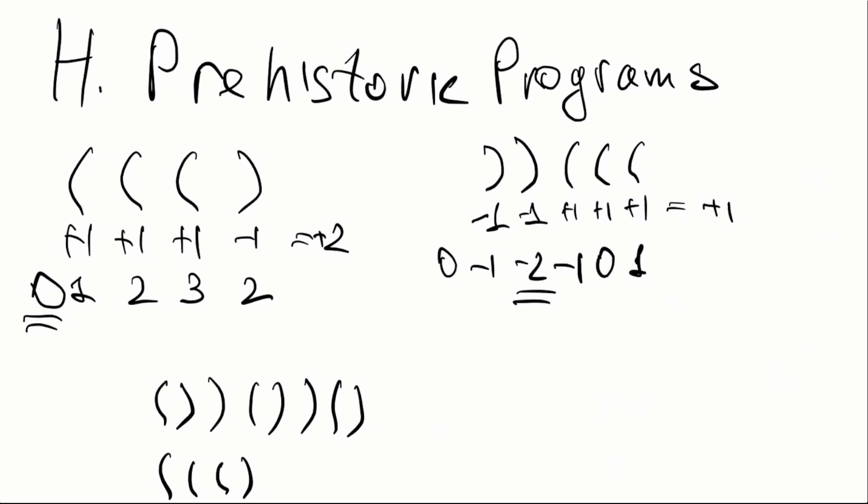For example, if you have three opening brackets and one closed, the total balance is plus two, while the minimum balance is zero. On the other side, if we have two closing brackets and then three open ones, the total balance is plus one, while the minimal balance is minus two.